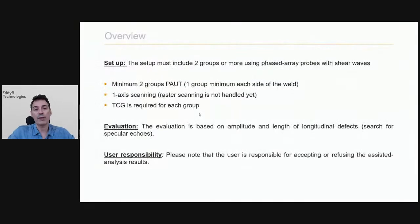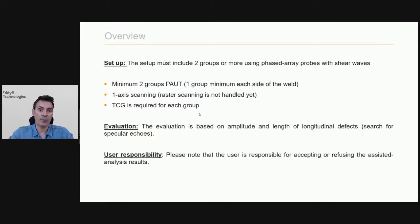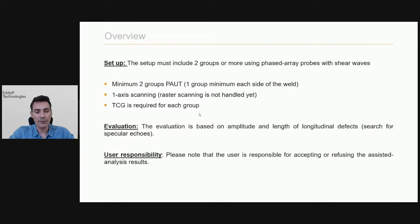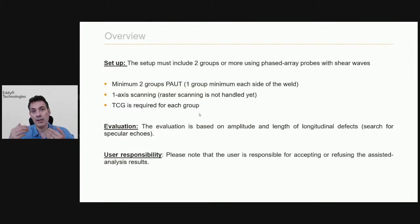Let's look at the type of configuration we can deal with. The setup must include a minimum of two groups. As we do weld inspection, we need inspection from both sides — this is required by standards, and the feature is based on standards. So you need at least one probe on each side of the weld. You need to scan your weld, so one-axis inspection and raster scan are not handled yet, but will be in the future.